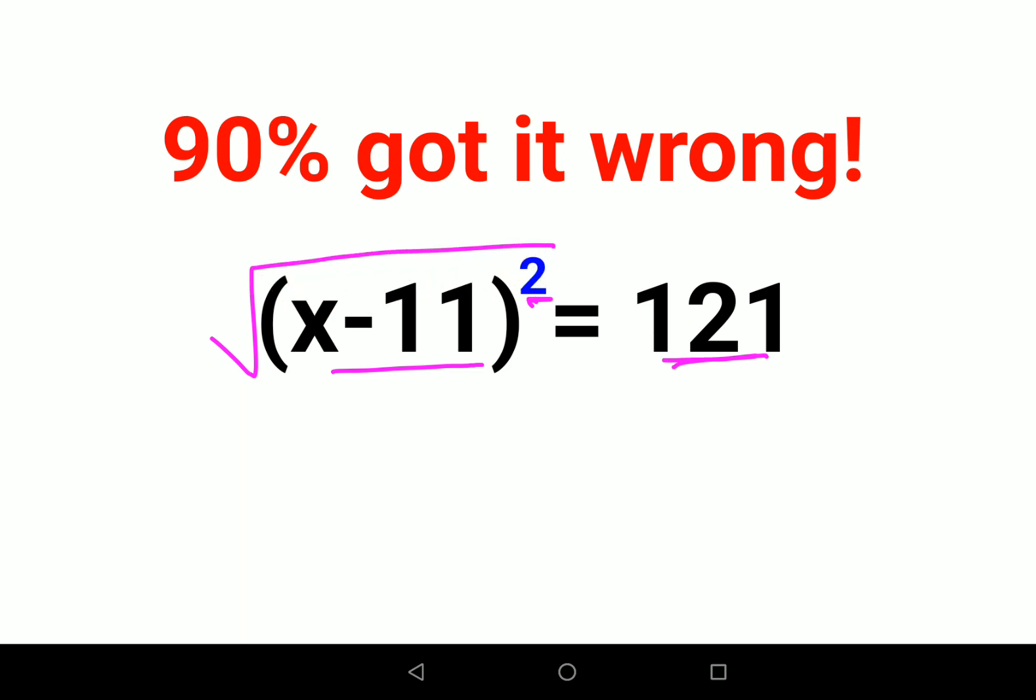So we will take a square root. When I take a square root I'm getting rid of this square, so I'm just left with x minus 11, and this is the square root of 121. Now since this is equal to a variable, the square root will have a plus minus sign followed ahead of the square root.